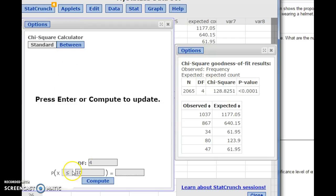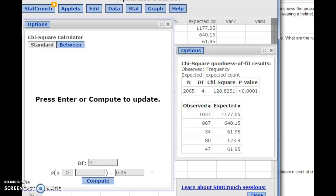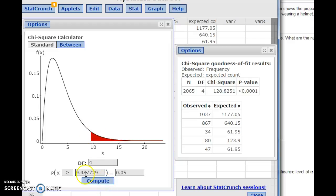Then to find your critical values, we're going to want to know how much is in the tail. So we change that to greater than. And then whatever your alpha is, if you want 5% in the tail, put 0.05 there, hit compute. And it gives you the critical value for four degrees of freedom and 5% in the tail.